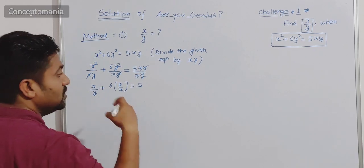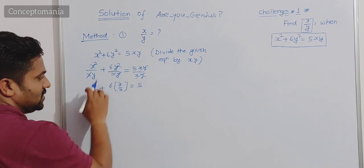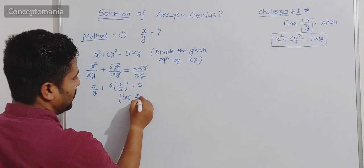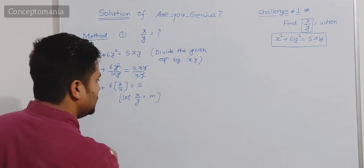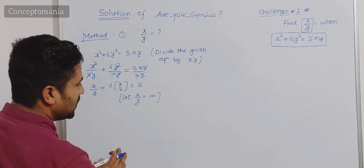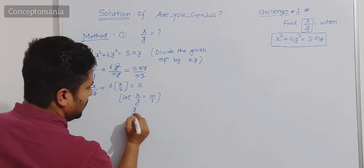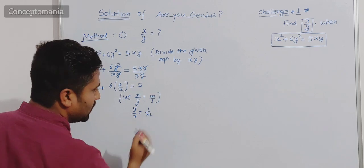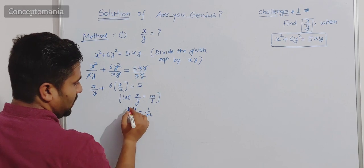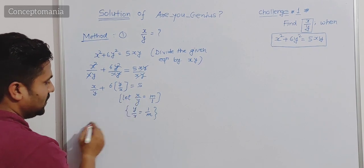We need to find x upon y, but here we also have y upon x which is creating a problem. So we need to assume a variable. Let x upon y be taken as m. Wherever we see x upon y we put m. And y upon x — if x upon y is m upon 1, then y upon x is 1 upon m. So at the place of y upon x we put 1 upon m.